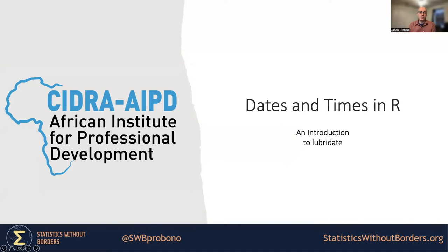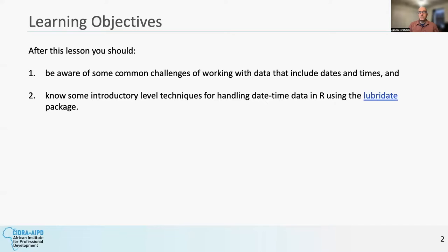Hi, welcome to another lesson in the SWB modules on R programming. In this lesson, we're going to cover working with dates and times in R using the Lubridate package. I am Jason Graham, a professor in the mathematics department at the University of Scranton in northeast Pennsylvania. I'll present some of the main concepts behind the Lubridate package. By the end of the lesson, you should have some idea about how to facilitate this in R using Lubridate.